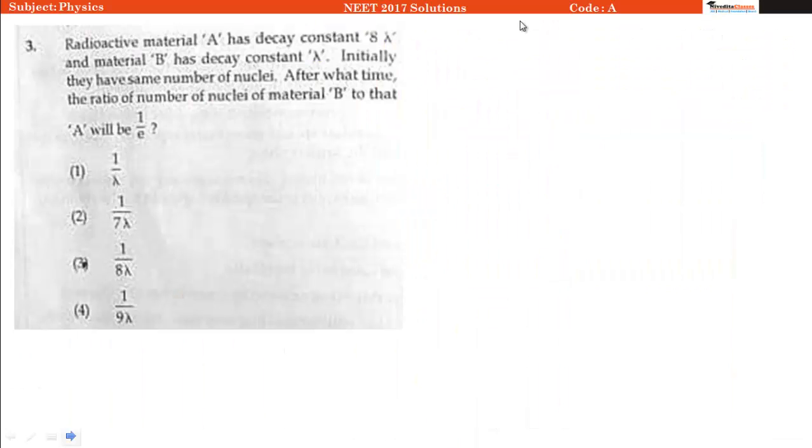The question says that radioactive material A has a decay constant of 8 lambda and material B has a decay constant of lambda. Initially they have the same number of nuclei. After what time will the ratio of number of nuclei of material B to that of A be 1 by E?